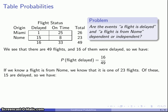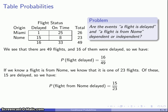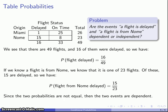Now, what if we knew the flight was out of Nome? If we know that, we'd be looking at just these 23 flights. Of those 23, 15 are delayed. So given that the flight is from Nome, the probability it is delayed is 15 out of 23. The important question is: are these two probabilities equal? Comparing 16/49 and 15/23, they are very unequal, so we conclude the two events are dependent. To determine independence, we simply compare the probability and the corresponding conditional probability — equal means independent, different means dependent.